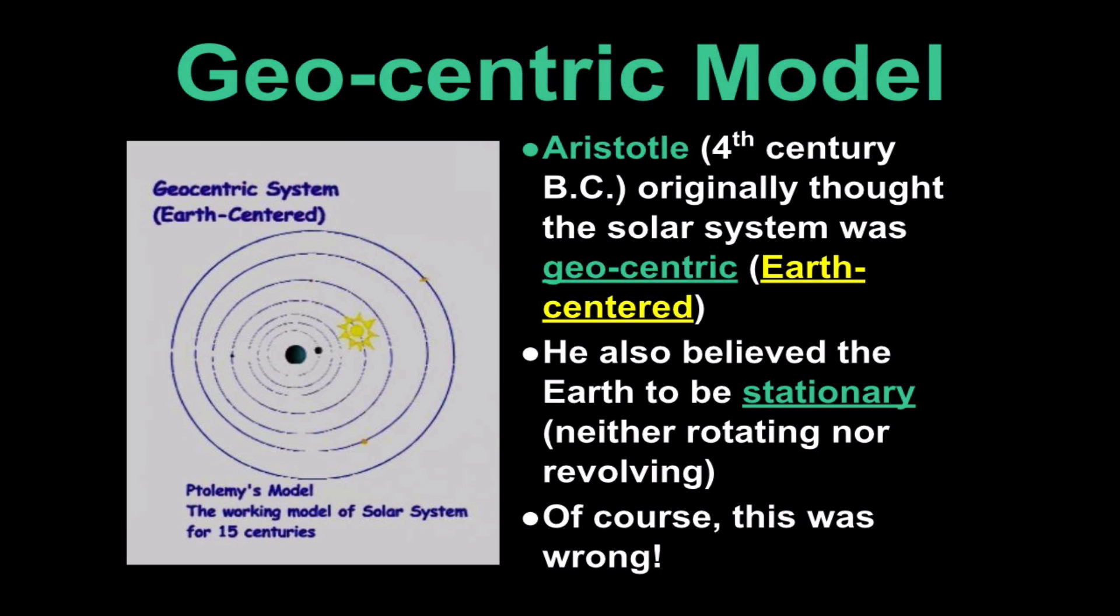In the geocentric model, the earth is centered and he also believed that earth was stationary. It wasn't rotating or revolving. We know this to be wrong at this point but here's our earth right here and anything and everything in the sky appeared to revolve around the earth.